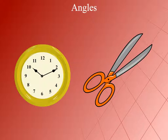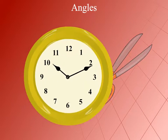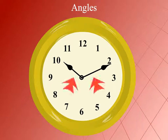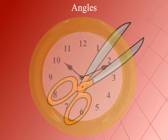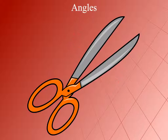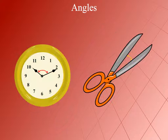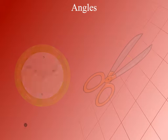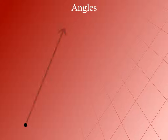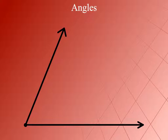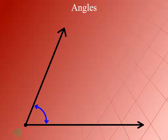Angles. You have already seen the hands of a clock and the open blades of a pair of scissors. The hands of a clock or scissors are hinged in the center — that is the initial point — and the two arms are portions of two rays having the same initial point.